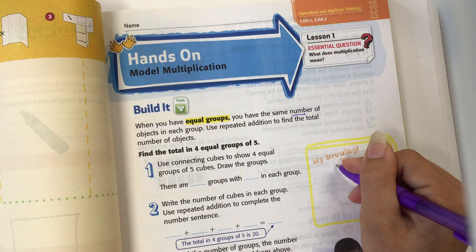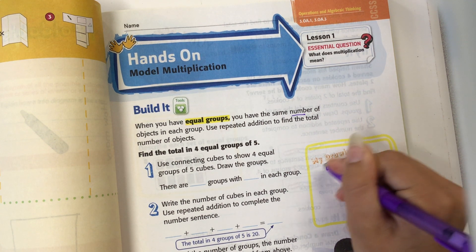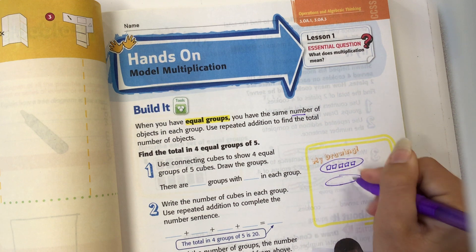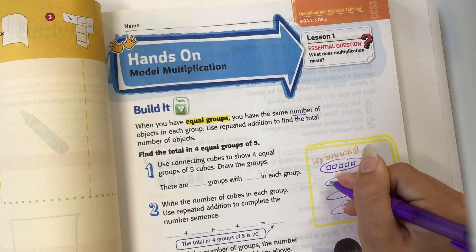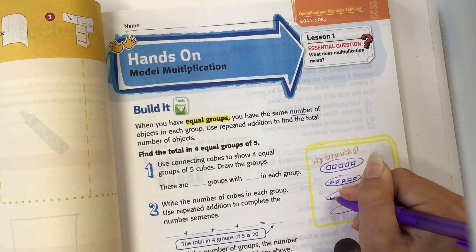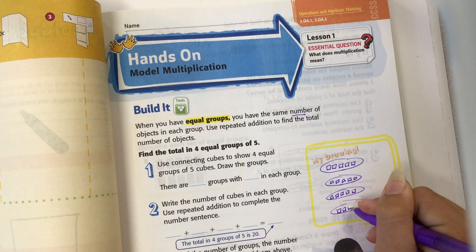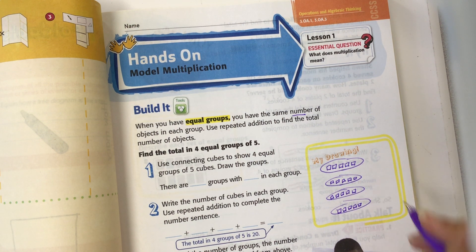So four equal groups of five cubes. You have one, two, three, four, five, and I have four groups. So I'm going to draw these four groups, and I'm going to draw five cubes. One, two, three, four, five. One, two, three, four, five. So there's my drawing.